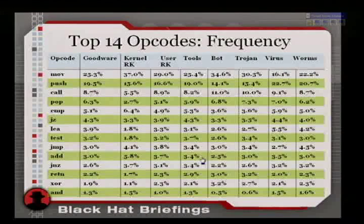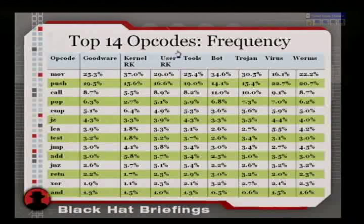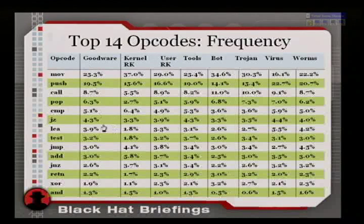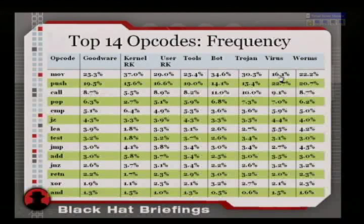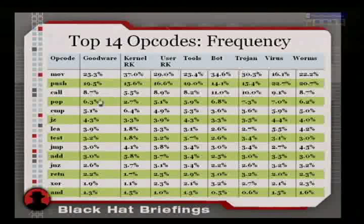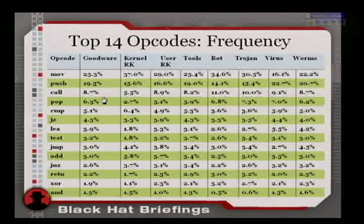Tallying this up: these are the top 14 most frequent opcodes. My baseline is the goodware — the non-malicious software — and we compare against the other classes. Viruses used, on average, 16% MOVs and 22% pushes, as opposed to goodware's 20% push and 8% call, and so on. The key here is that this is a frequency distribution.